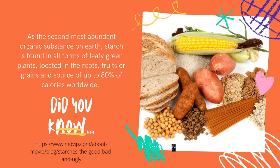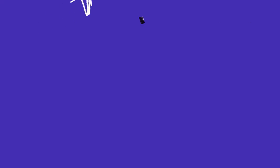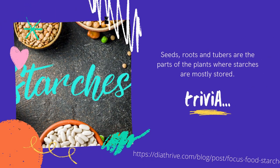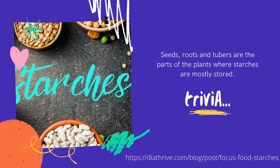As the second most abundant organic substance on earth, starch is found in all forms of living green plants, located in the roots, fruits, or grains, and is a source of up to 80% of calories worldwide. Trivia: seeds, roots, and tubers are the parts of the plants where starches are mostly stored.